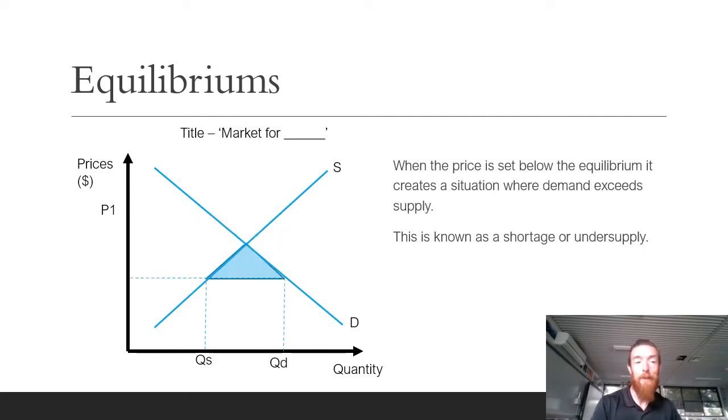When the price is set below the equilibrium price, supply is much less than demand. So demand exceeds supply in this situation. If demand exceeds supply, we call this a shortage or an undersupply because there's not going to be enough stock for how much consumers are demanding. What happens in this instance is often consumers will then basically outbid each other and push up prices until you get back up to that equilibrium point. When the price is set below the equilibrium, it will cause a shortage.